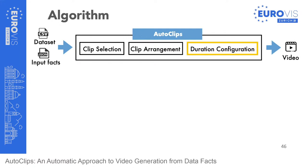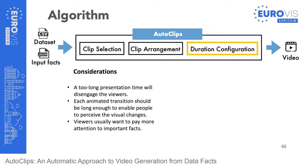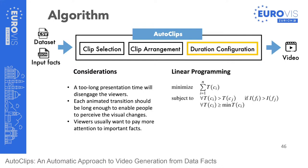In the last step, AutoClips configures clip durations to ensure optimal video length. We consider three issues: the data video should be short to keep viewers engaged; animations should not be too fast, giving people time to perceive visual changes; and important facts should be assigned longer durations. AutoClips configures duration using linear programming based on these three considerations, where t is the duration of the clip and i is the importance of the corresponding fact. The importance of a fact can be set manually or automatically calculated using existing statistical techniques.